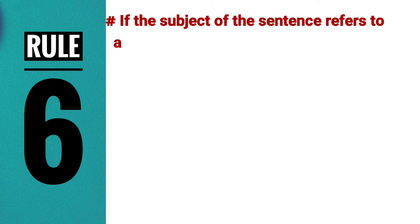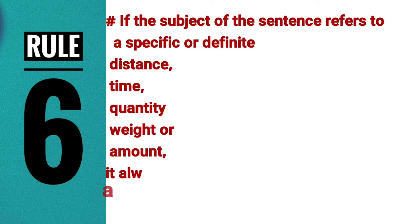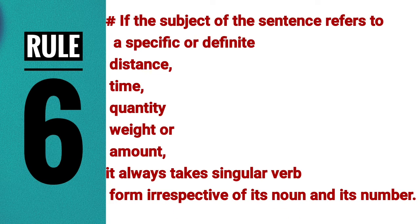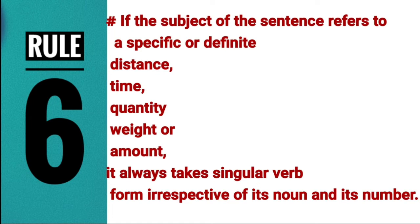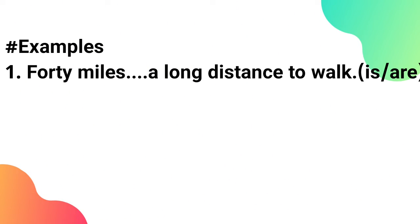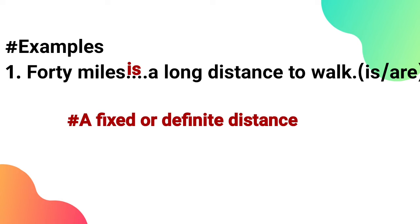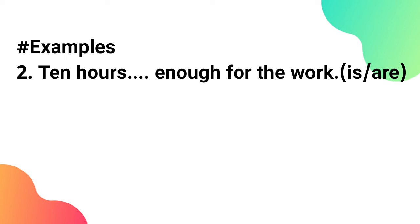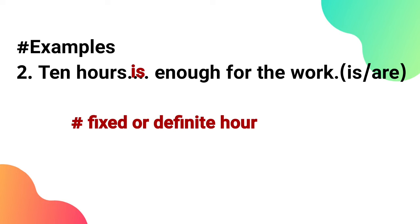The sixth rule: if the subject of the sentence refers to a specific or definite distance, time, quantity, weight, or amount, it always takes singular form regardless of the noun and number. For example, '40 miles is a long distance to walk' and '10 hours is enough for the work' — both take singular form because they refer to a fixed, definite measure.